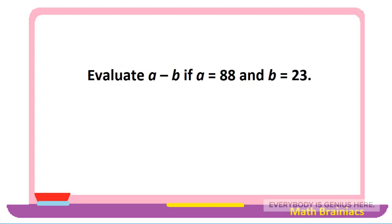Let us work on another example: evaluate a minus b if a is equal to 88 and b is equal to 23. We are going to write the equation a minus b, then substitute the values — replacing a with 88 and b with 23 — and it will give us 88 minus 23. Correspondingly, it will give us 65. A minus b is equal to 65 if a is 88 and b is 23.